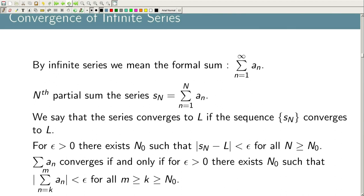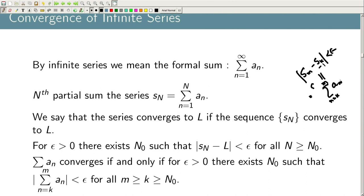Formally, the series Σ a_n converges if and only if for every ε > 0 there exists n₀ such that |Σ(k=n to m) a_k| < ε for all m ≥ n ≥ n₀. This is the Cauchy criterion: S_m − S_k < ε means the partial sums form a Cauchy sequence, and since ℝ and ℂ are complete, every Cauchy sequence converges.